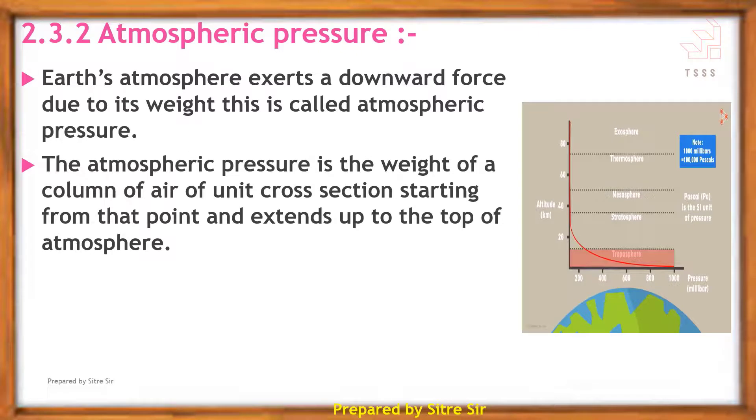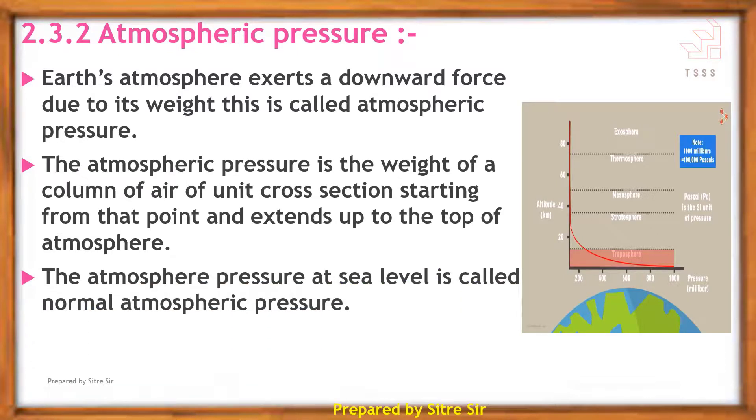The atmospheric pressure is the weight of the column of air of unit cross section starting from that point and extending up to the top of the atmosphere. The atmospheric pressure at sea level is called normal atmospheric pressure.